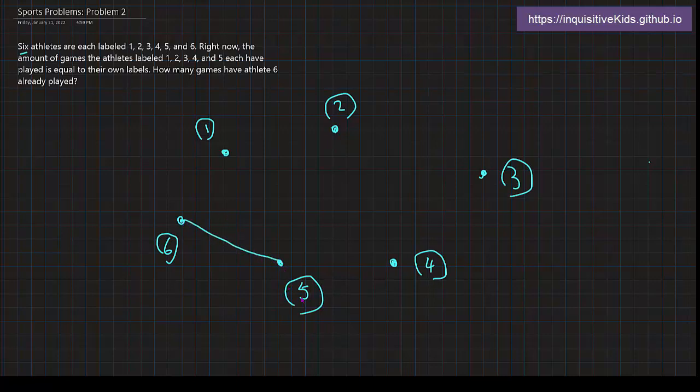So, I'm going to make athlete 5 play a game against athlete 6, against athlete 1, athlete 2, athlete 3, and athlete 4. And all together, that's 1, 2, 3, 4, 5 lines. Now, I'm going to make an X right here where athlete 1 is just to show that we can't add any more lines to athlete 1 yet.